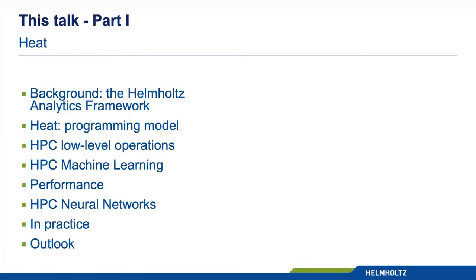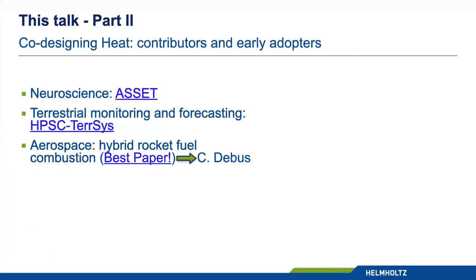It's going to be a longer presentation — the first time I give an 80-minute presentation. I'm going to split it into two parts. In the first part I'll tell you about HEAT's inner workings and what's currently available in version 1.0. In the second part I'll mention one of the pillars of the original HEAT idea: the library has been co-designed by its own first power users. We'll show three examples of early adopters — one from neuroscience, one from hydrogeological simulations, and one aerospace use case.